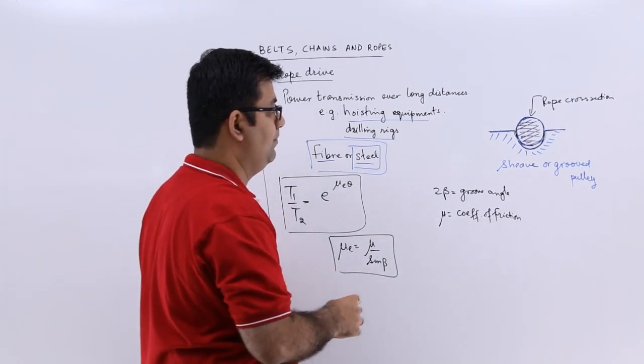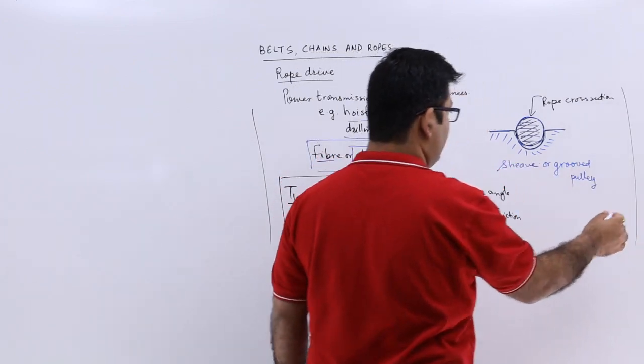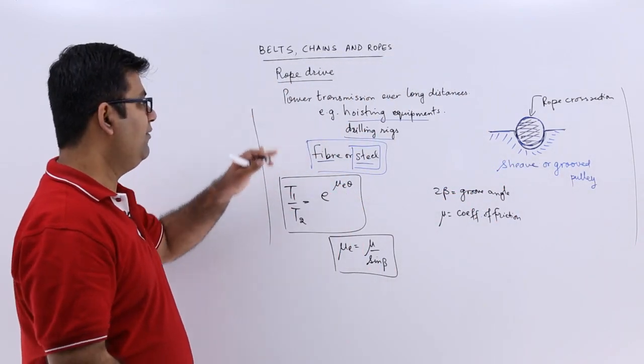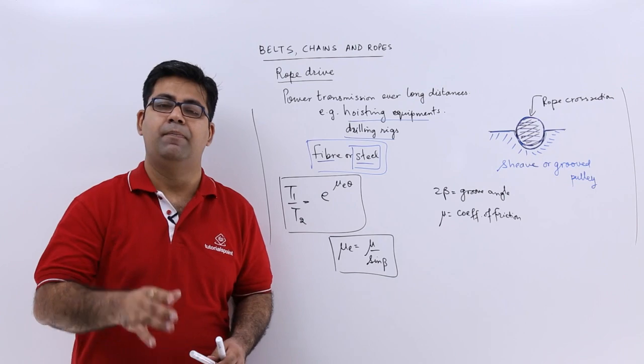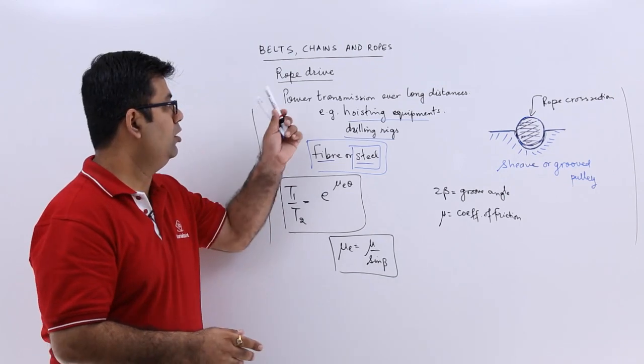So this is the topic that talks about the rope drive. Now let us finish this chapter by looking at a simple numerical on rope drive.